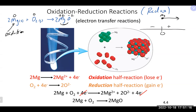As soon as you identify that magnesium is going through oxidation, by default the oxygen must be going through reduction. You can confirm this by checking oxygen's oxidation state moving from 0 to −2 — more negative, so reduced. The nice thing is if you identify one, you don't have to think too hard about the other — they always occur together. You can use that simple number line to figure out what is happening.